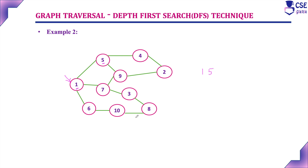So now we visit 5. The currently visited vertex is 5. Consider the adjacent unvisited vertices to 5, that is 4 and 9. Break the tie and visit 4. The next currently visited vertex is 4. The adjacent unvisited vertex to 4 is 2, because 5 is already visited.